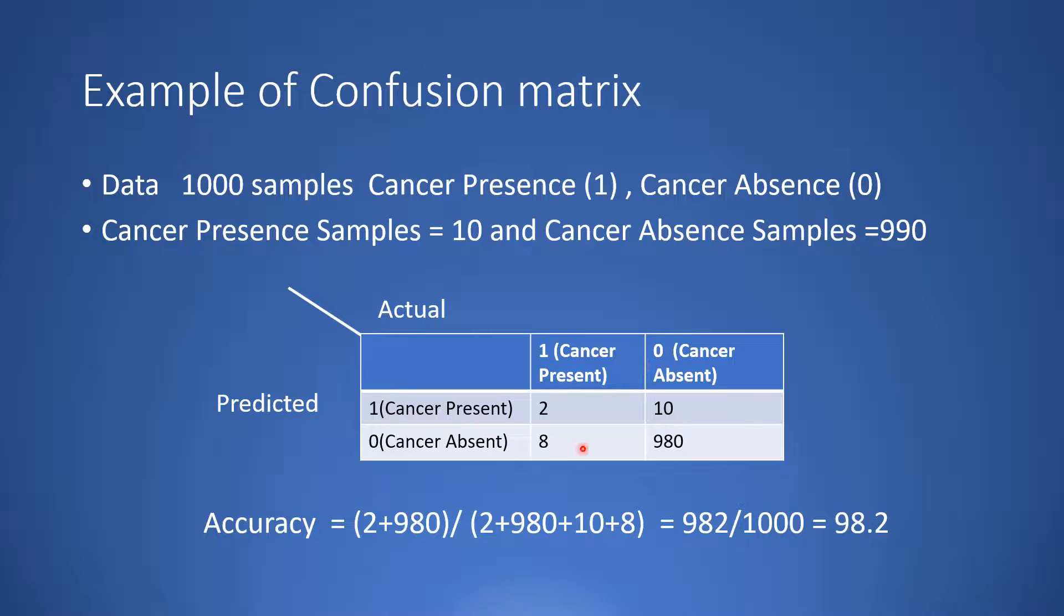In case of an imbalanced data set, the accuracy is not a good measure because if you look at this algorithm, we are missing on 8 cancer patients over here who have cancer but they are getting predicted as they don't have cancer. This is actually a limitation of looking at accuracy as a metric for the performance of classification algorithms.